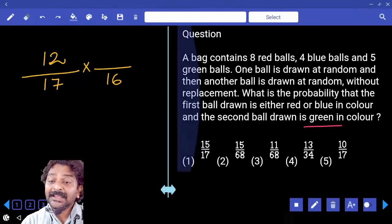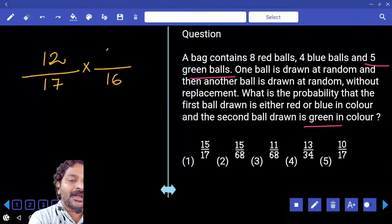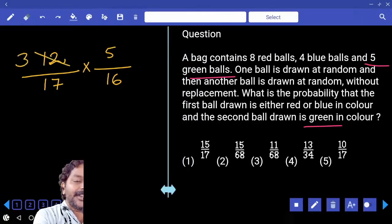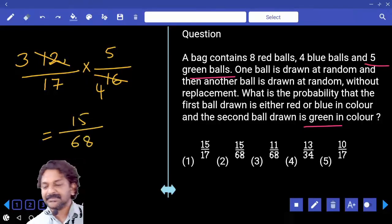And that should be green in color. How many green color balls we have? So now we need to pick one ball, 5C1 ways. That's 12 over 17 times 5 over 16, which equals 15 over 68.